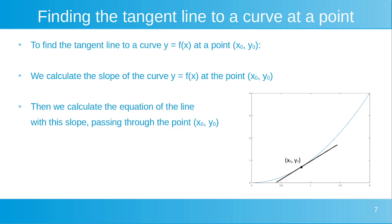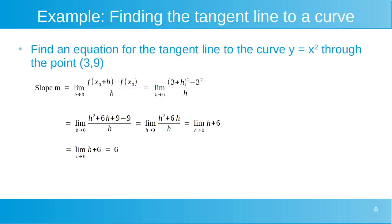To find the tangent line to a curve at a point x0, y0, this is how we do that. To find the tangent line to a curve y is equal to f of x at a point x0, y0, we first calculate the slope of the curve y is equal to f of x at the point x0, y0. Then we can calculate the equation of the line with this slope, passing through the point x0, y0.